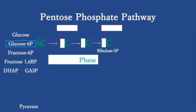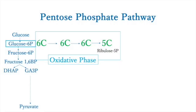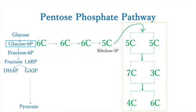After the oxidative phase, the non-oxidative phase occurs. In the oxidative phase, NADPH molecules are produced, but not in the non-oxidative phase. The total number of carbons comes to 10 in each reaction: 5 plus 5, 7 plus 3, and 4 plus 6. So you can remember the carbon numbers 5, 7, and 4.